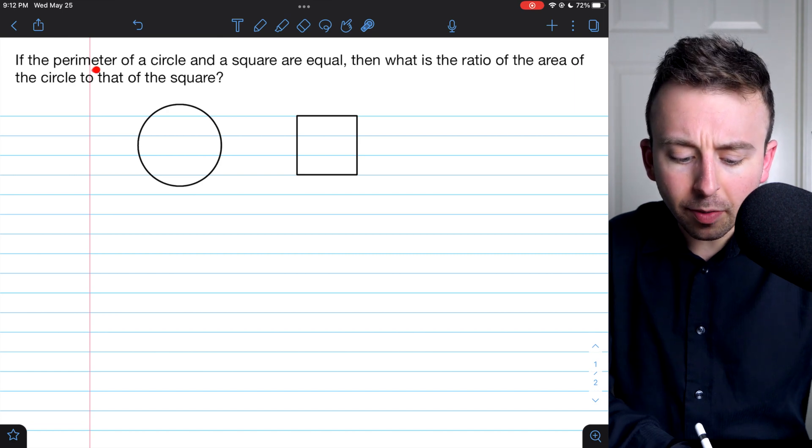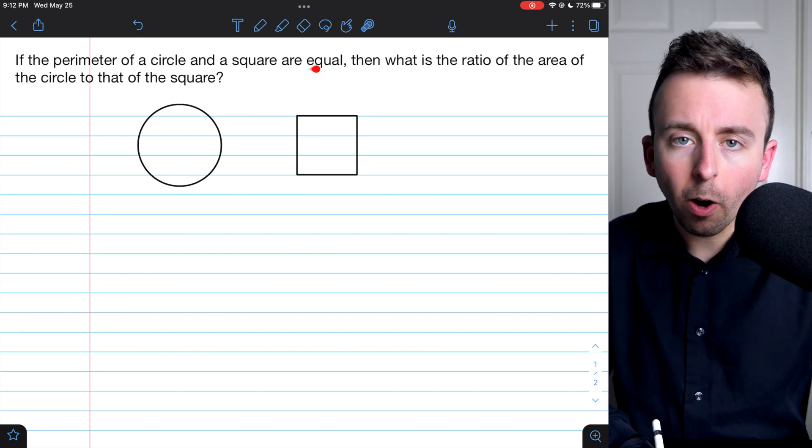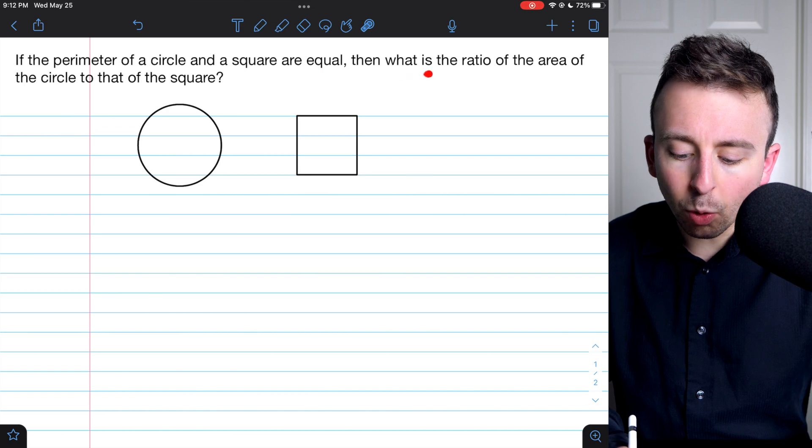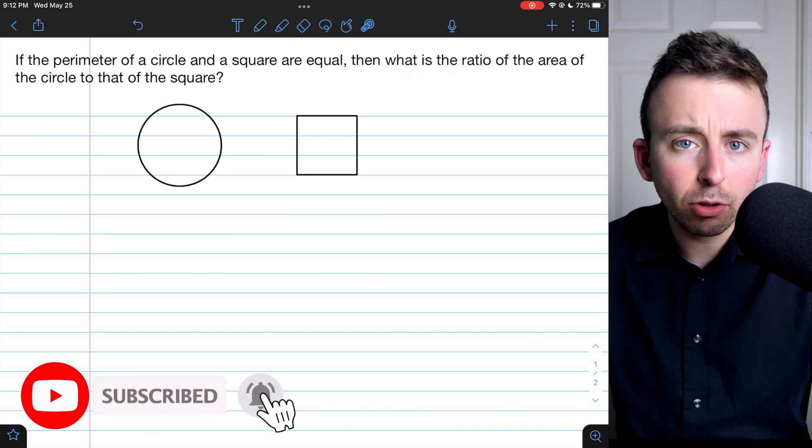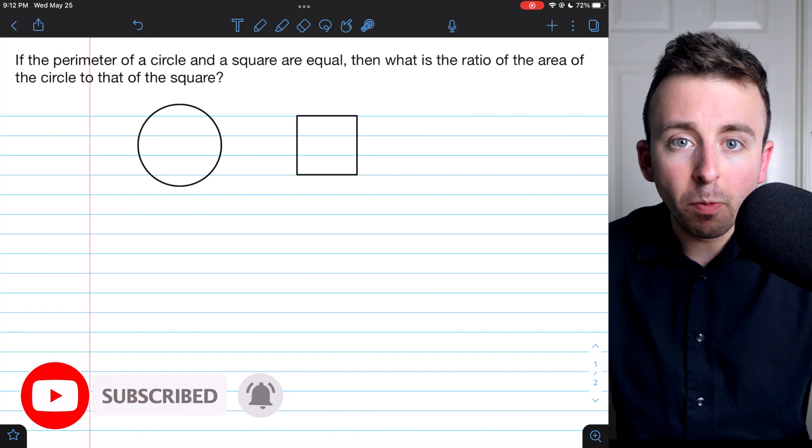Hi there. If the perimeter of a circle and a square are equal, then what is the ratio of the area of the circle to that of the square? That's what we're going to go over today.